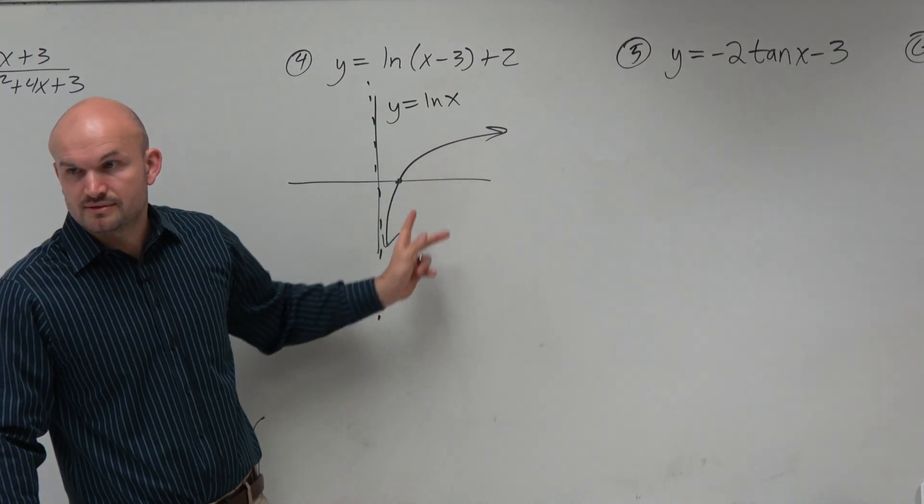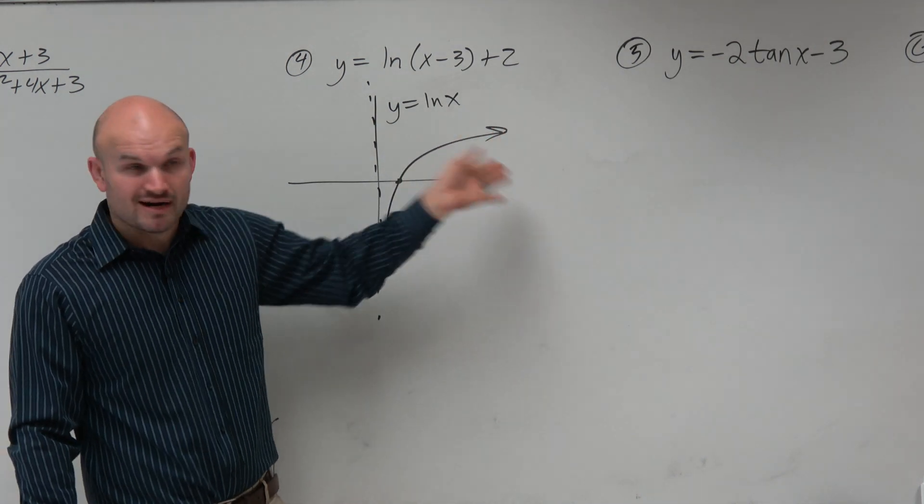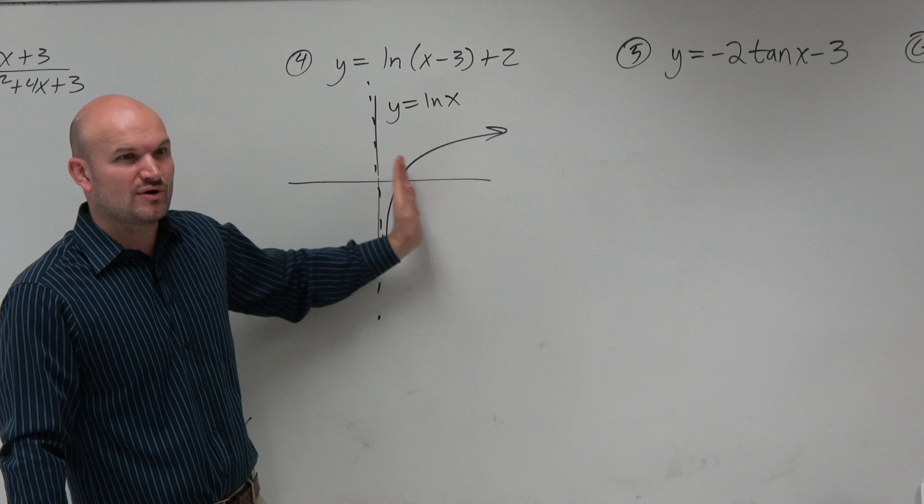There's no breaks, holes, or asymptotes that break up the graph, right? There is an asymptote here, but that doesn't break up the graph, right?